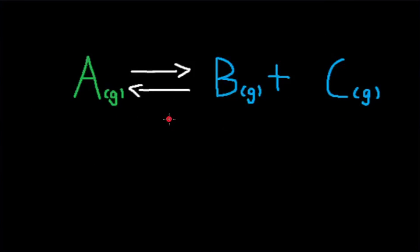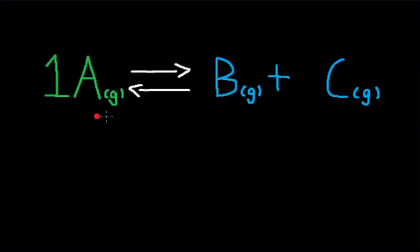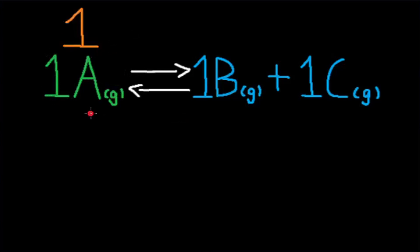The final stress you need to know is pressure changes. For pressure changes, we need to look at the total gas moles on the reactant side and the total gas moles on the product side. On the reactant side, A has no coefficient, so it has 1. On the product side, B and C also have no coefficient, so they are 1 each. In total, we have 1 gas mole on the reactant side and 2 gas moles on the product side.